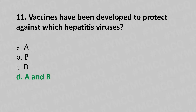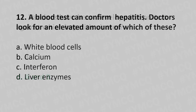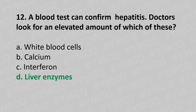Now let's move to question number 12. In a blood test to confirm hepatitis, doctors look for an elevated amount of which of these? Option A, white blood cells. Option B, calcium. Option C, interferon. Option D, liver enzymes. And the answer is... Option D, liver enzymes.